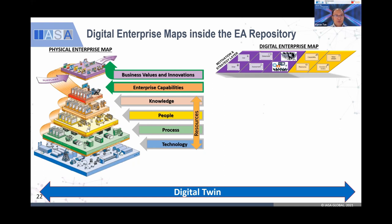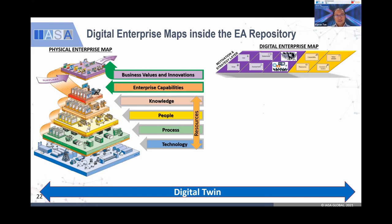The first layer is understanding the motivation and strategy layers of key stakeholders — what makes our bosses unable to sleep at night. In architecture, these are called concerns — they are drivers. Architecture needs to address those concerns so they can sleep well at night. Imagine our job as architects is to make sure our bosses don't need sleeping pills anymore — they express their concerns and drivers, and we model the solution for them. That is basically the method and concept of digital EA.